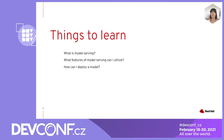I hope that at the end of our time together here today, you can walk away knowing what model serving is and why it's useful, the features that model serving offers to enhance the business value of models, and how to deploy a model on Red Hat's enterprise version of Kubernetes, OpenShift, using the open source project Seldon Core.